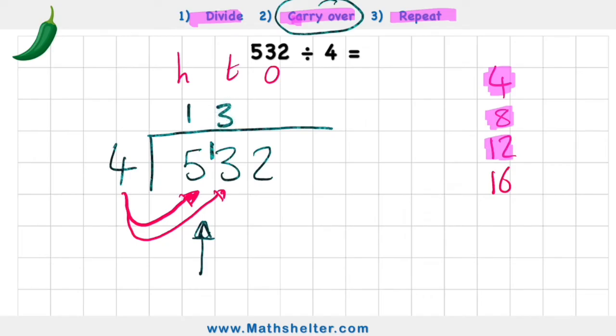But did I have any left over? Yes because there was 13 and I only got to 12. So what's the difference between 12 and 13? One again. So one left over.